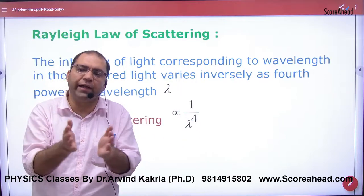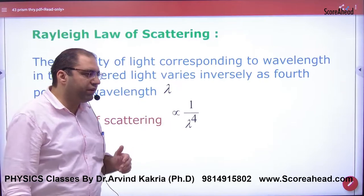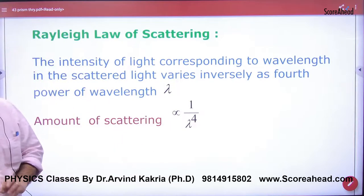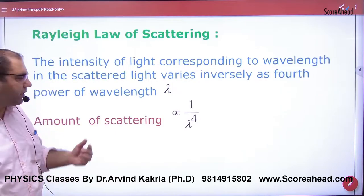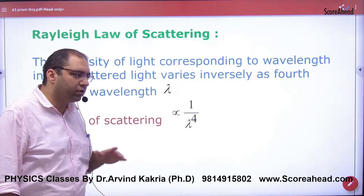He said the amount of light scattered is inversely proportional to that wavelength raised to power 4. So smaller wavelength means increased scattering, and larger wavelength means reduced scattering.